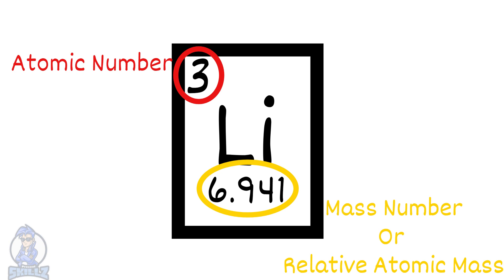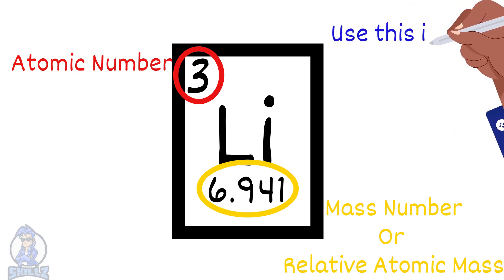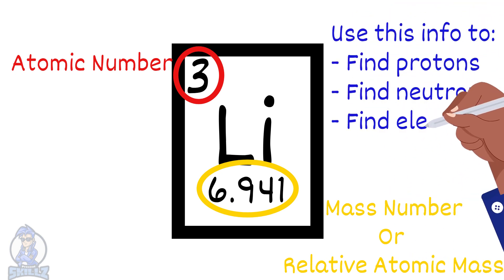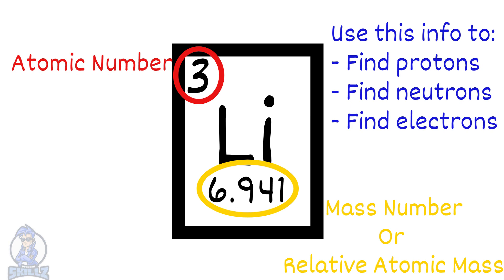Since it provides all this information, you can use the periodic table to find the number of neutrons, protons and electrons in an atom.